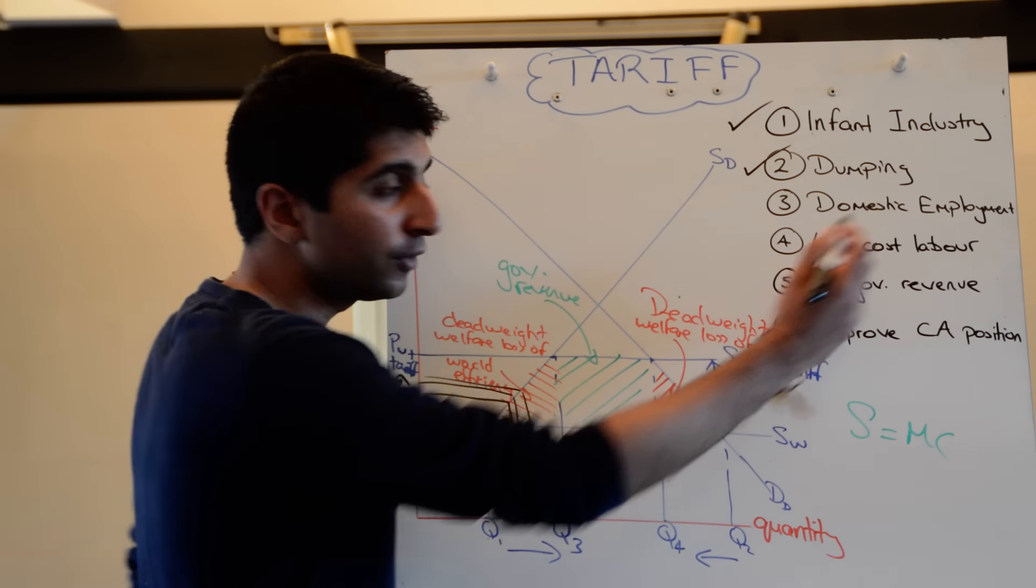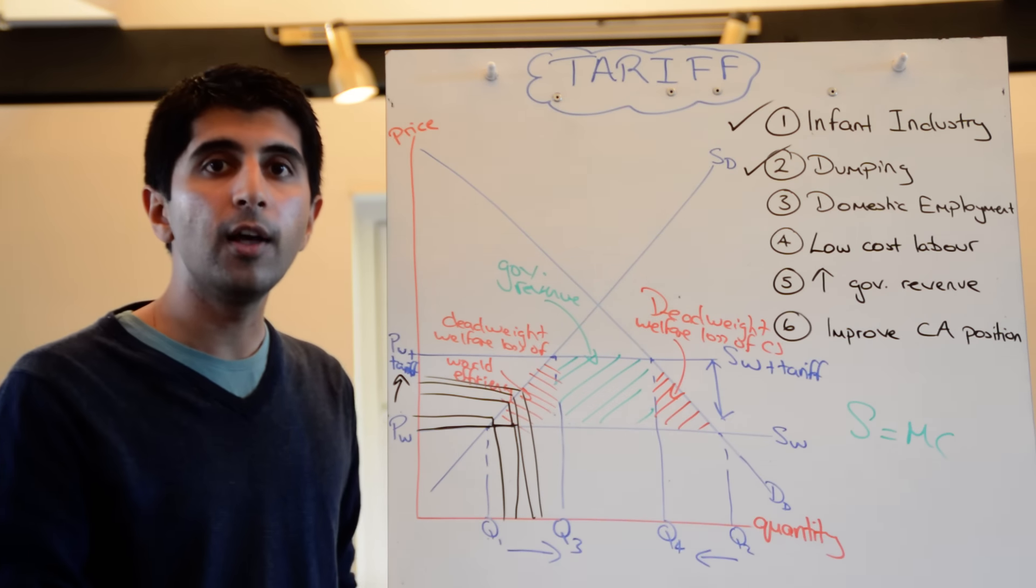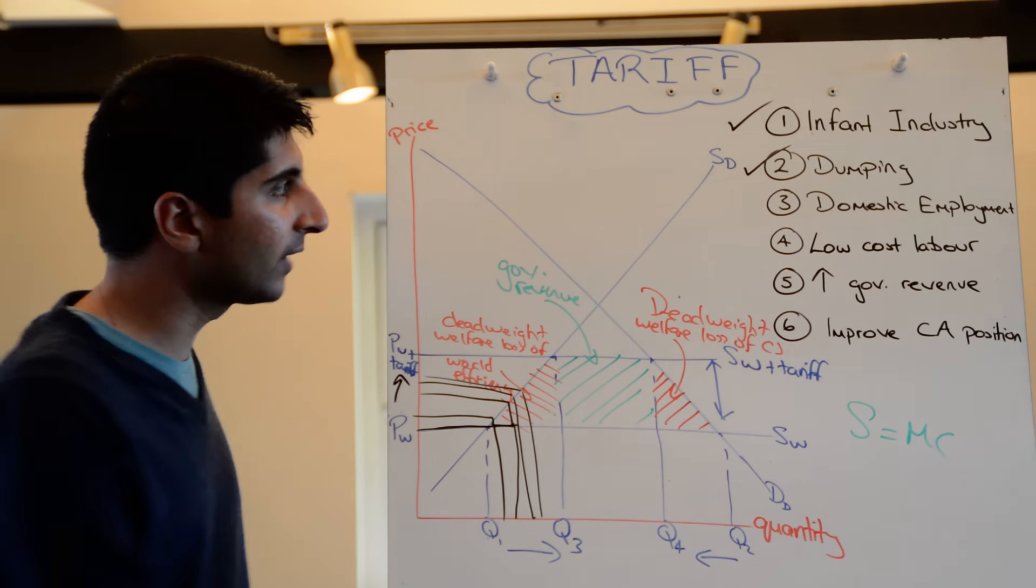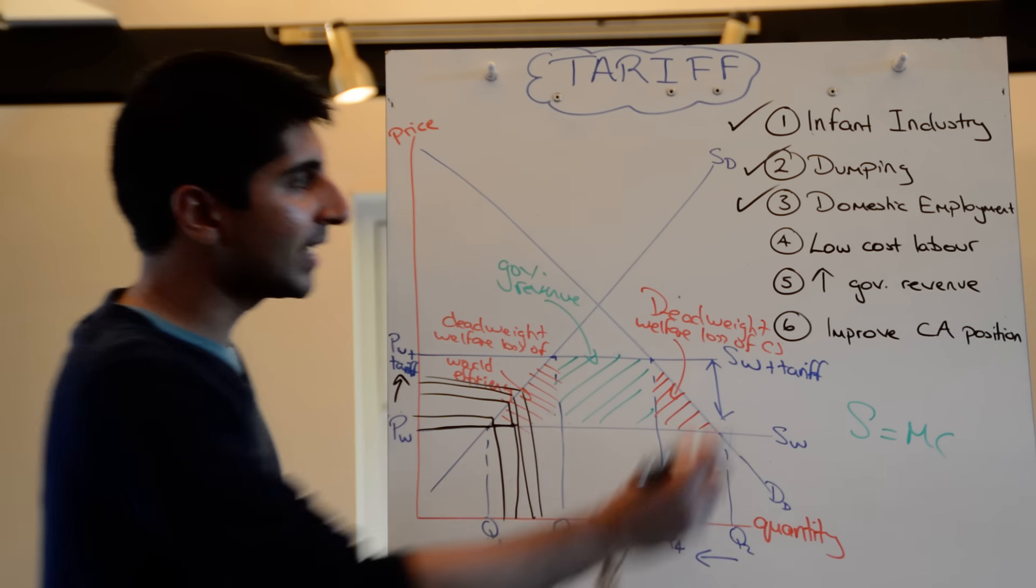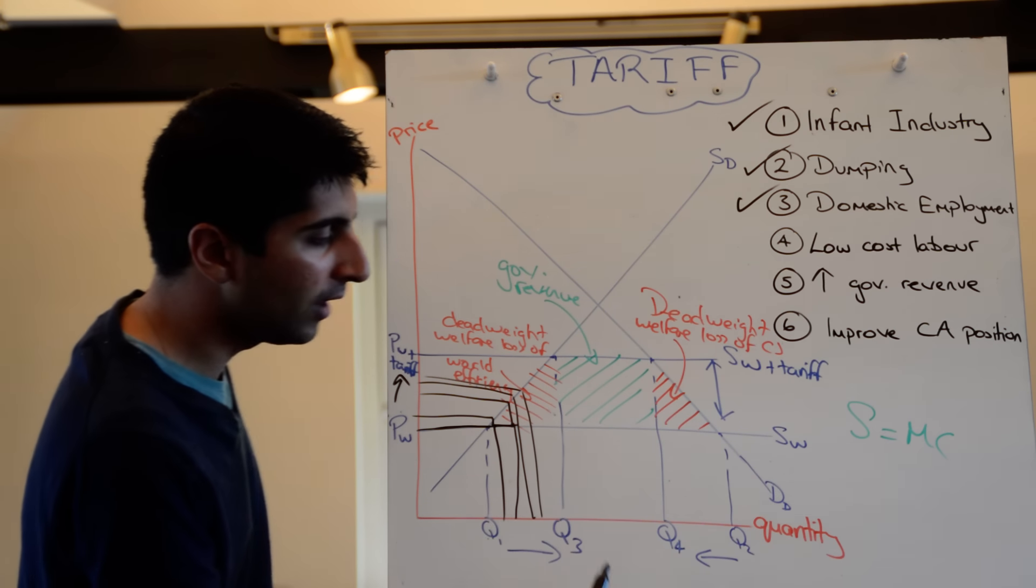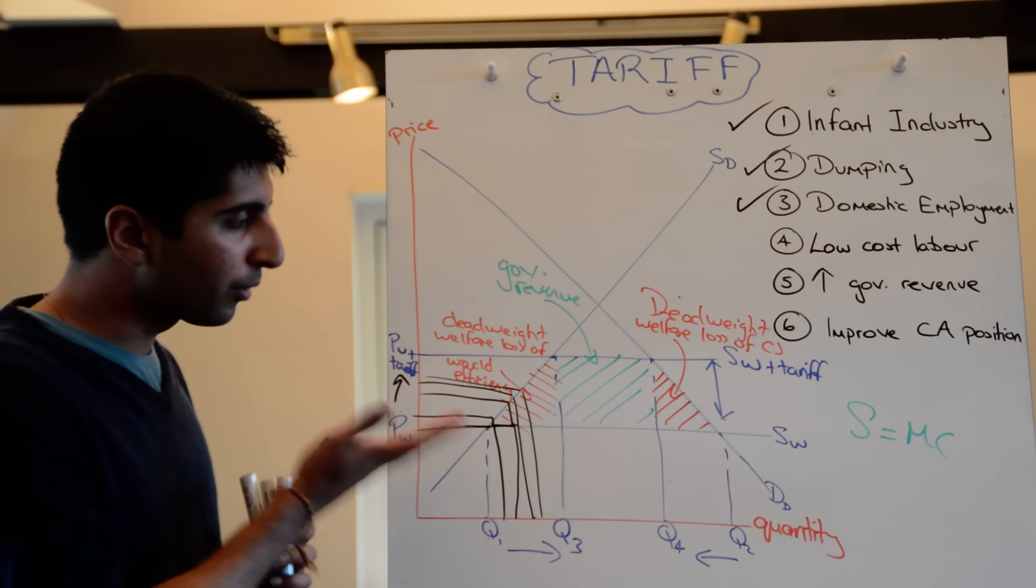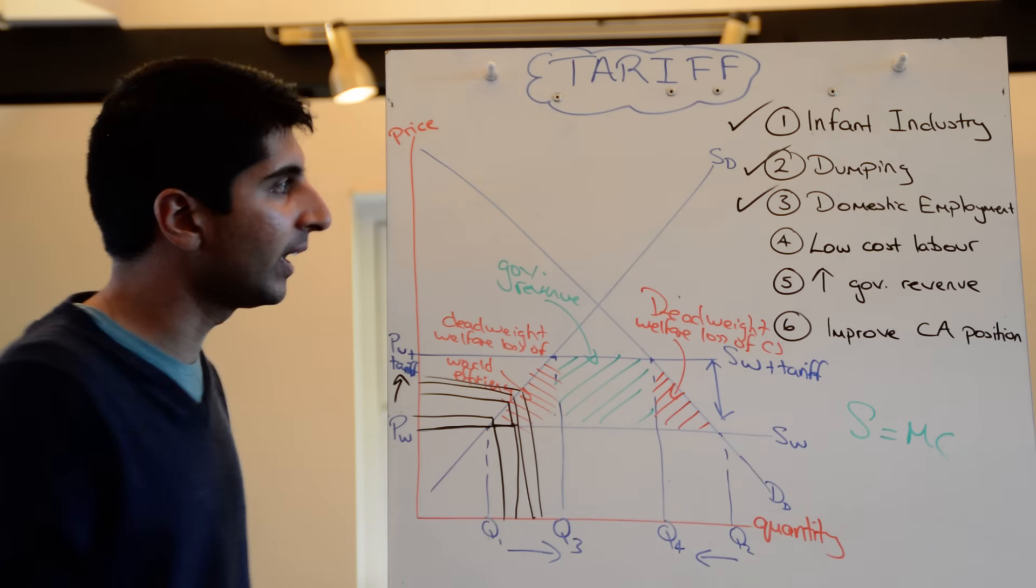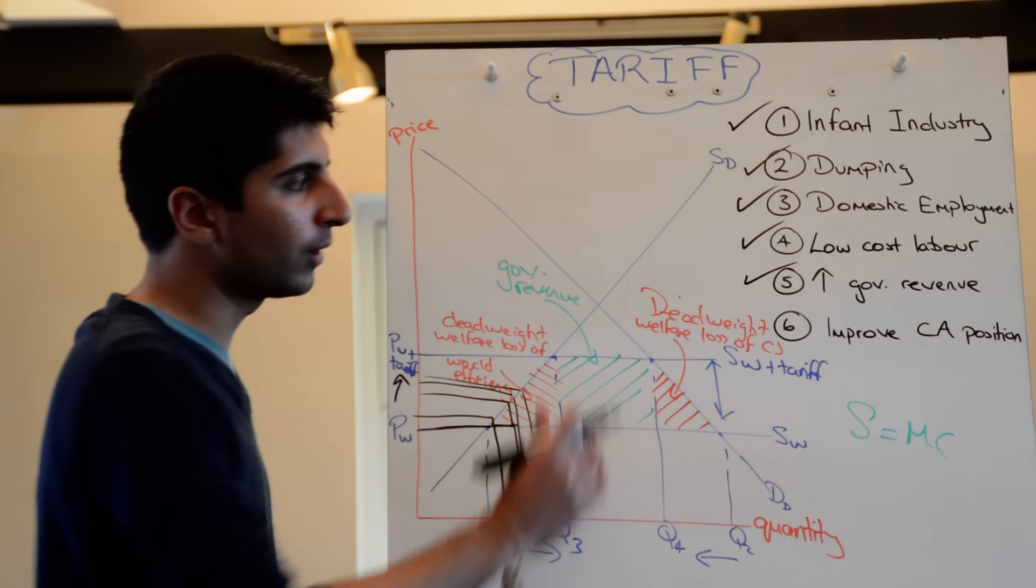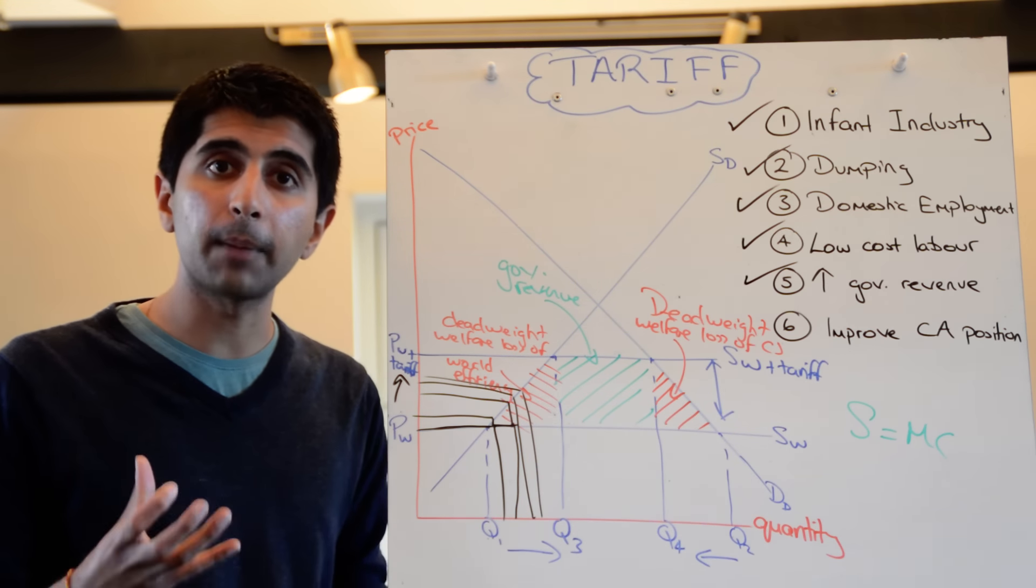To protect against losses of domestic employment. Is that happening here? We can see the increase in domestic supply from Q1 to Q3 probably will need an increase in workers to supply that. Or at worst, just keep the same labor force. So in that sense, domestic employment is protected. To protect against artificial advantages abroad like low cost labor. Well again, we are squeezing imports, aren't we? So imports from Q3 to Q4 are being squeezed. And the price of imports coming in has actually increased, offsetting any advantages from low cost labor. The increase in government revenue, we have seen that with the green box here.